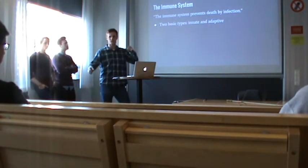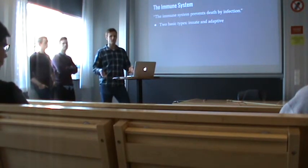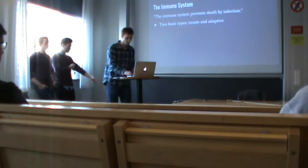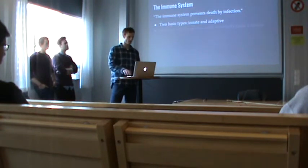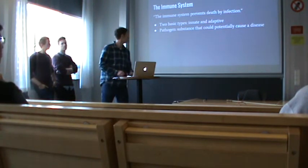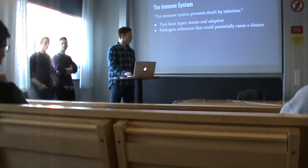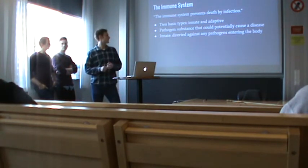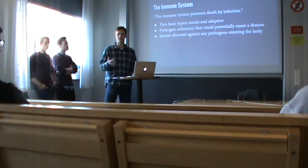There are tons of different substances entering our body all the time, and the immune system will check each and every one. You will first encounter the innate immune system. These substances are called pathogens — defined as a substance that could potentially cause a disease. The innate immune system is directed against any pathogen entering the body, and innate comes from the word inherited, so it's based on inherited traits in the genes — certain substances should just be removed immediately.